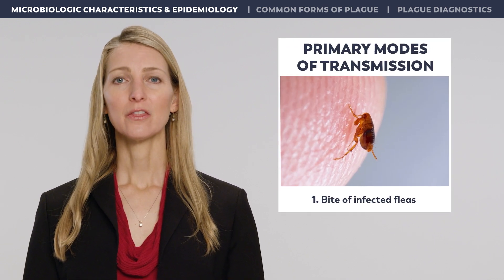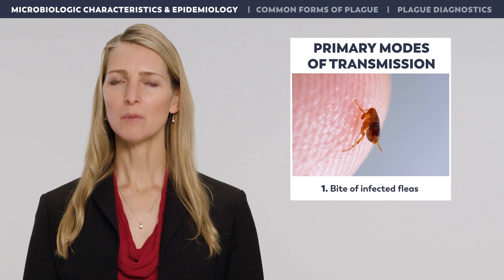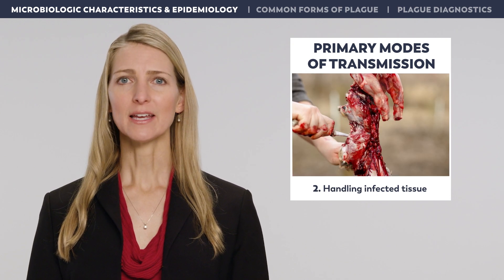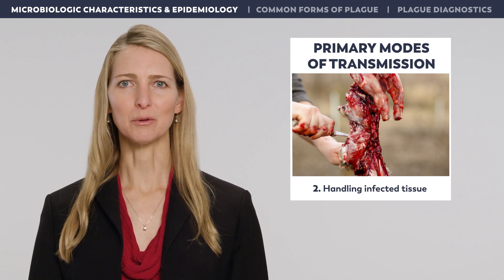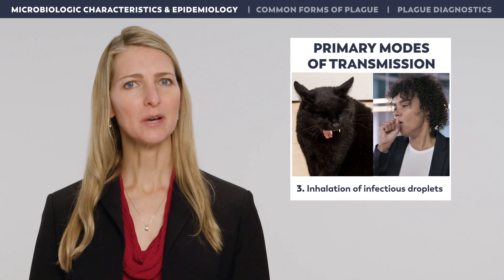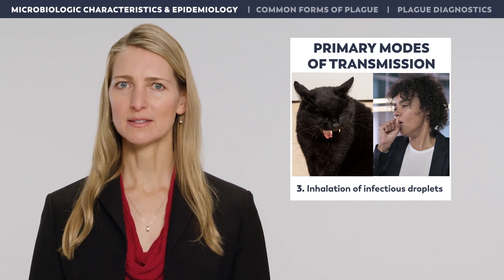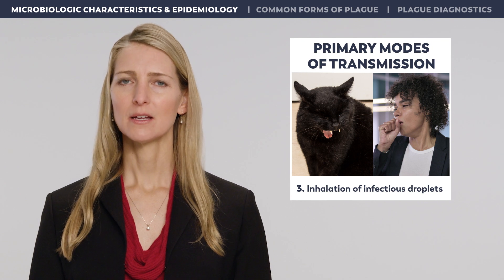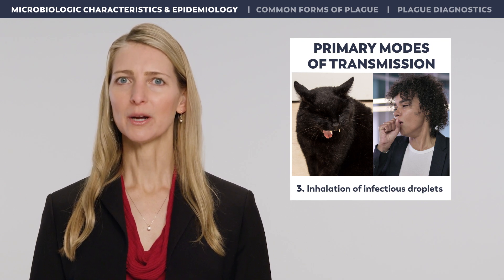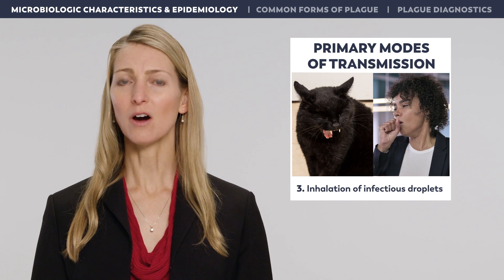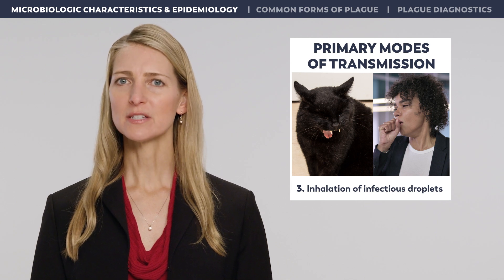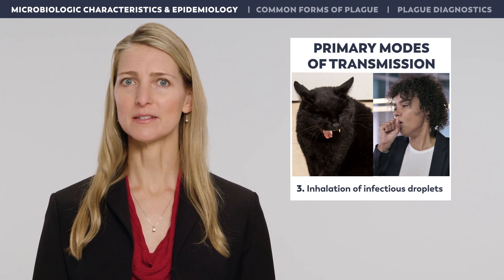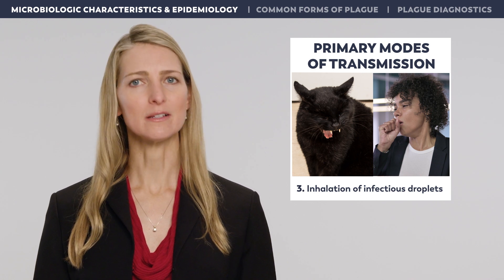There are three primary ways that people become infected with Y. pestis. The first is from the bite of an infected flea, which is the most common method of transmission. Second, people become infected by directly handling the tissues or carcasses of infected animals. Finally, Y. pestis can be transmitted through direct inhalation of infectious droplets, which usually results in pneumonic plague. Direct inhalation can occur when a person or animal with pneumonic plague coughs and generates droplets inhaled by another person. Aerosolizing procedures such as necropsy can also spread Y. pestis if adequate personal protective equipment is not worn.